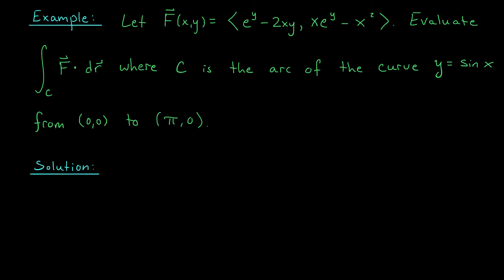Let's try an example where we put it all together. Here I've given you a vector field f that looks kind of complicated, and I'm asking you to evaluate a certain line integral of f over the arc of the curve y = sin(x) from (0,0) to (π, 0). Parametrizing that path wouldn't be too hard — I could write x = t, y = sin(t) with t between 0 and π. But if I go by definition to evaluate this line integral, I'm going to have to take some horrible integral, and I'd really prefer not to. Instead, I'm going to try to find a potential function, show it's conservative, and use the fundamental theorem.